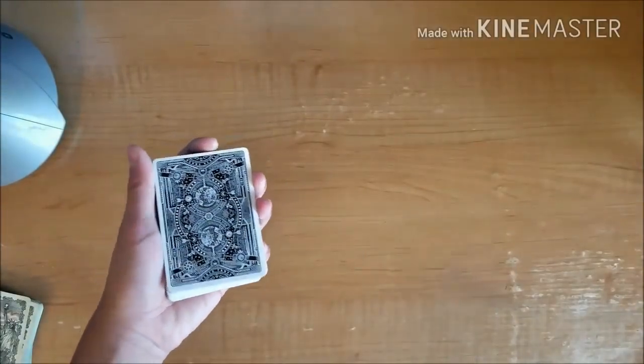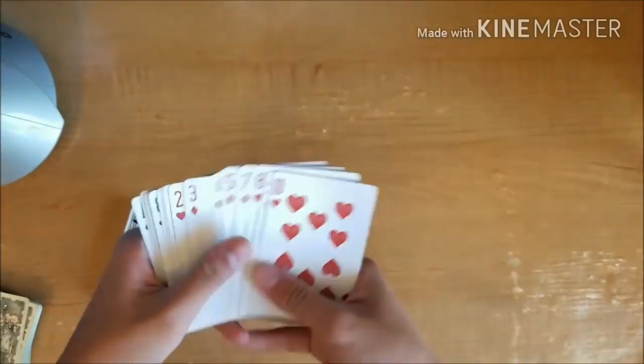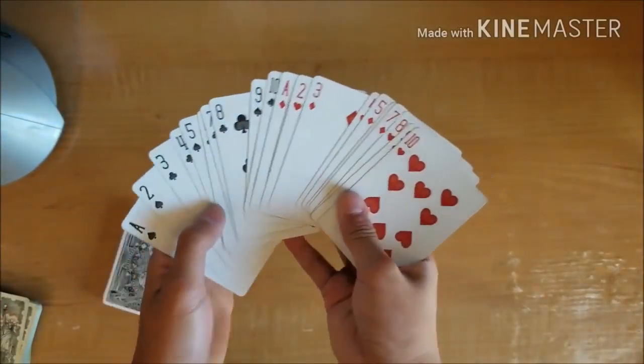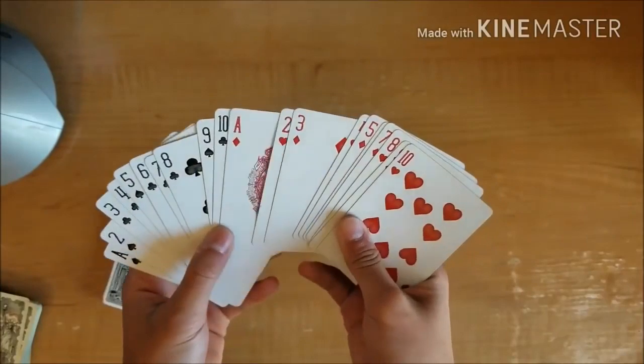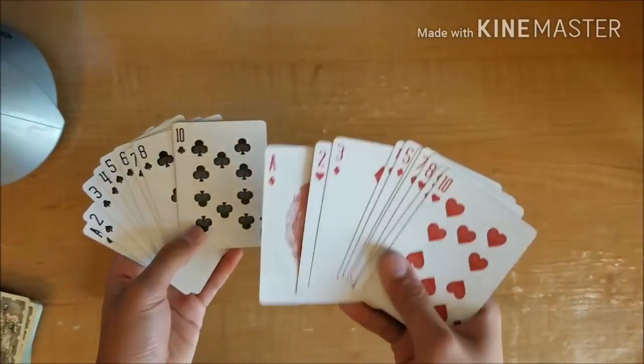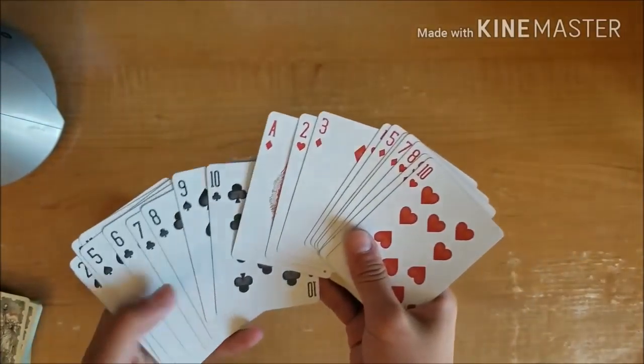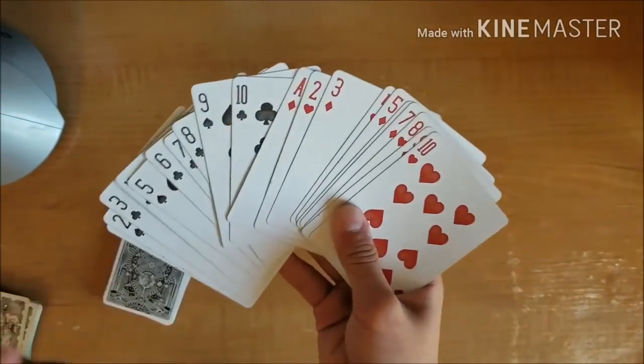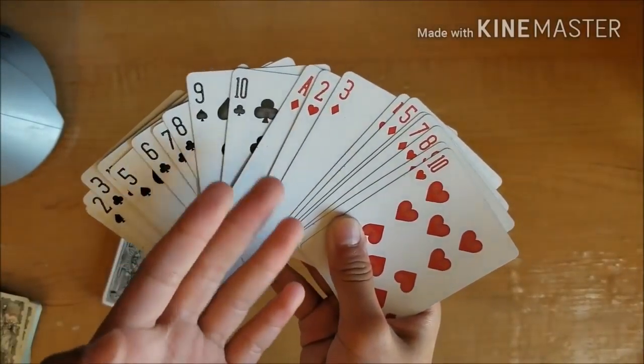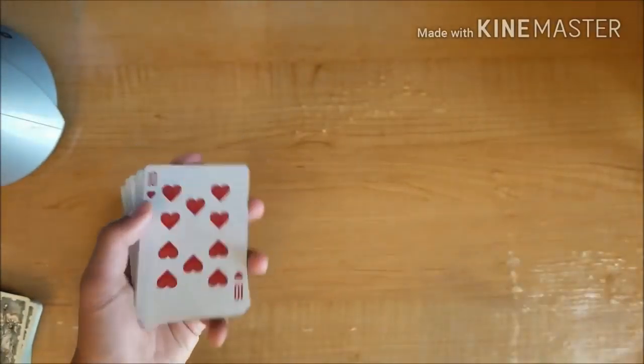The setup is black ace to ten and the red ace to ten. You can do it in one suit, so you can say ace to ten in all clubs and ace to ten in all hearts, but I just varied it a bit so it makes it look more random. So spades, clubs, diamonds, hearts, it doesn't really matter.